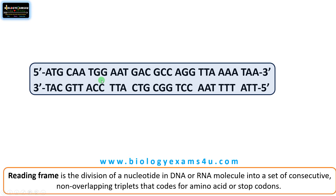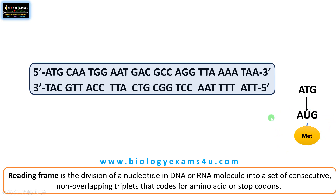A reading frame is the division of a nucleotide sequence in a DNA or RNA molecule into a set of consecutive non-overlapping triplets that code for an amino acid or stop codons. This ATG upon transcription becomes AUG — in RNA, thymine is replaced with uracil — and this AUG codes for the amino acid methionine, which is the starting amino acid. So it's actually a codon.